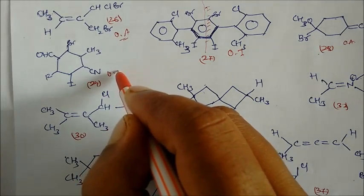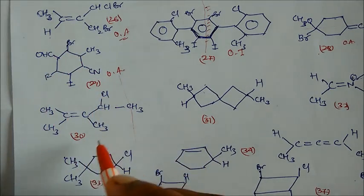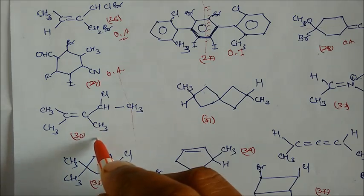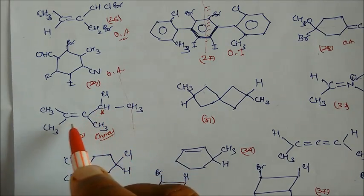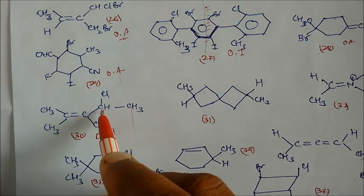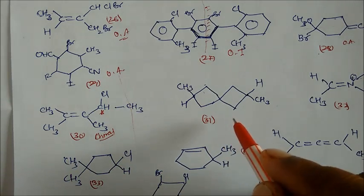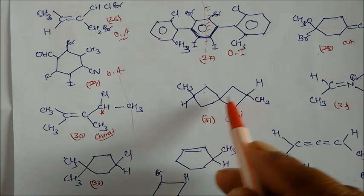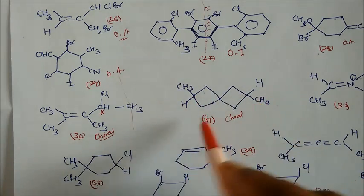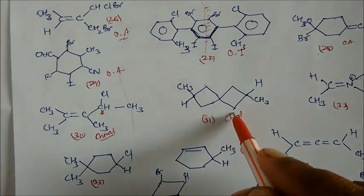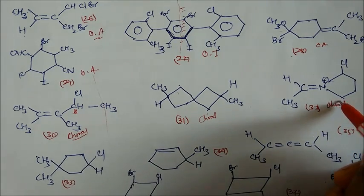Compound 29 is optically active — very clear, because Br and all groups are totally different, making it a pure optically active compound. Compound 30 is chiral — the chiral carbon is here, and due to this chiral carbon with different groups CH3, Cl, H, it is optically active. Compound 31 is also chiral because it has an internal bond in a cyclic structure — if the two groups are different, it is chiral. Compound 32 is also chiral — both groups are clearly different.